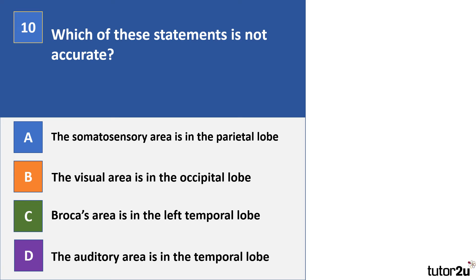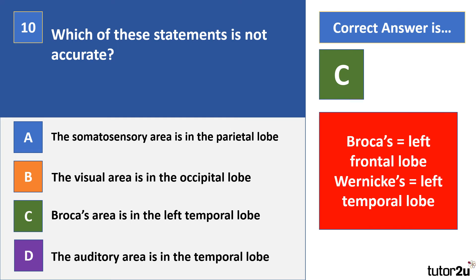Question ten. Which of these statements is not accurate? A: the somatosensory area is in the parietal lobe; B: the visual area is in the occipital lobe; C: Broca's area is in the left temporal lobe; D: the auditory area is in the temporal lobe. The incorrect answer is C. Broca's area is in the left frontal lobe, not the temporal lobe. Wernicke's area is in the left temporal lobe. So although both Broca's and Wernicke's areas are in the left hemisphere, they are in different lobes — important to remember when answering questions about the work of Broca or Wernicke.